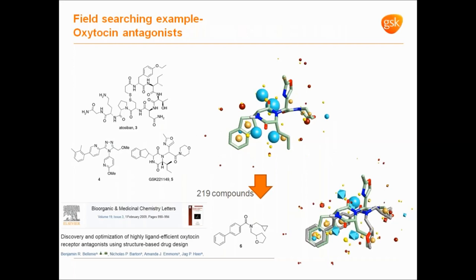Here's an example from our group about using that type of approach to do some virtual screening. Again, you'll see a very complex molecule in the top left, along with some small molecule structures, all of which are oxytocin receptor antagonists. When you distil out the essential pharmacophore, what's very surprising given the size of the top left molecule is that you can actually do the same job with a very small molecule. Looking at them, we would never think intuitively that those two molecules could appear similar to a protein — but they do.